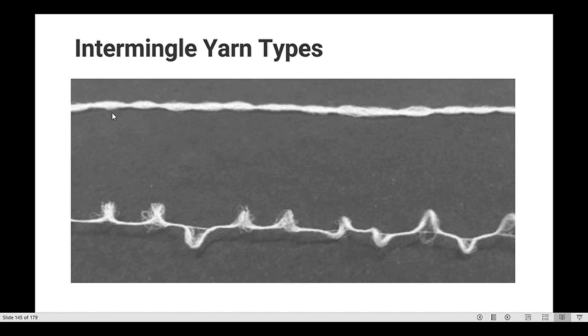Here is a plain yarn without any intermingling, and below you can see yarn having different intermingling. The different intermingling types are with respect to the number of interminglings per meter or per inch.